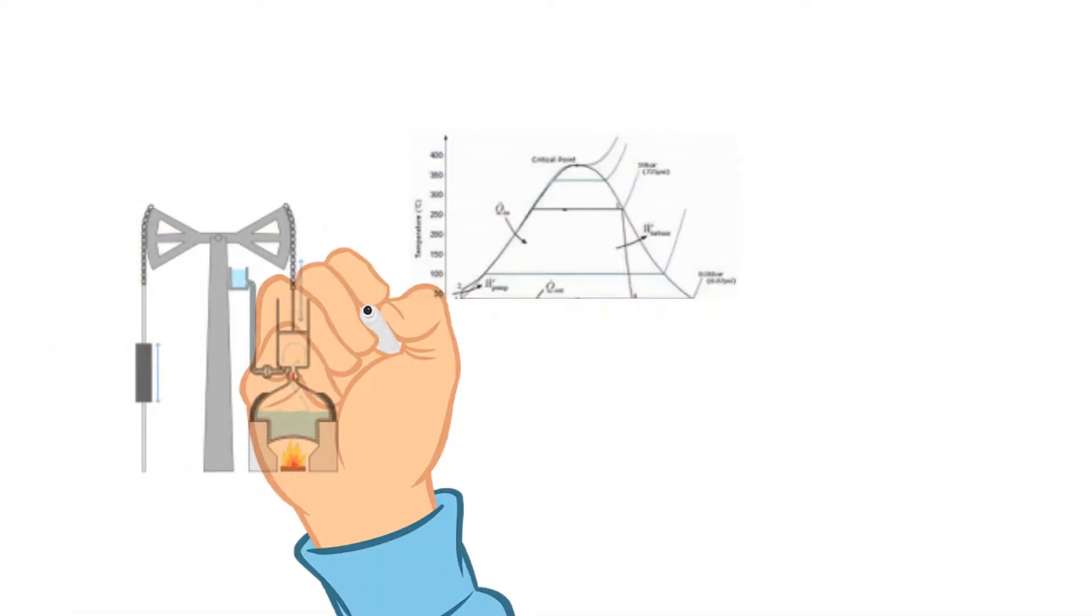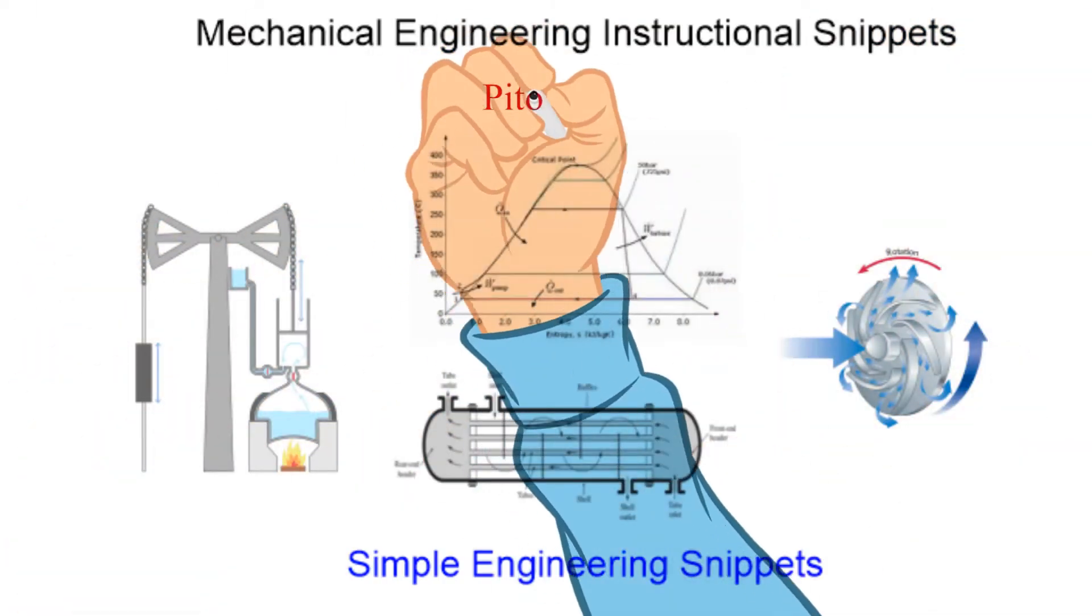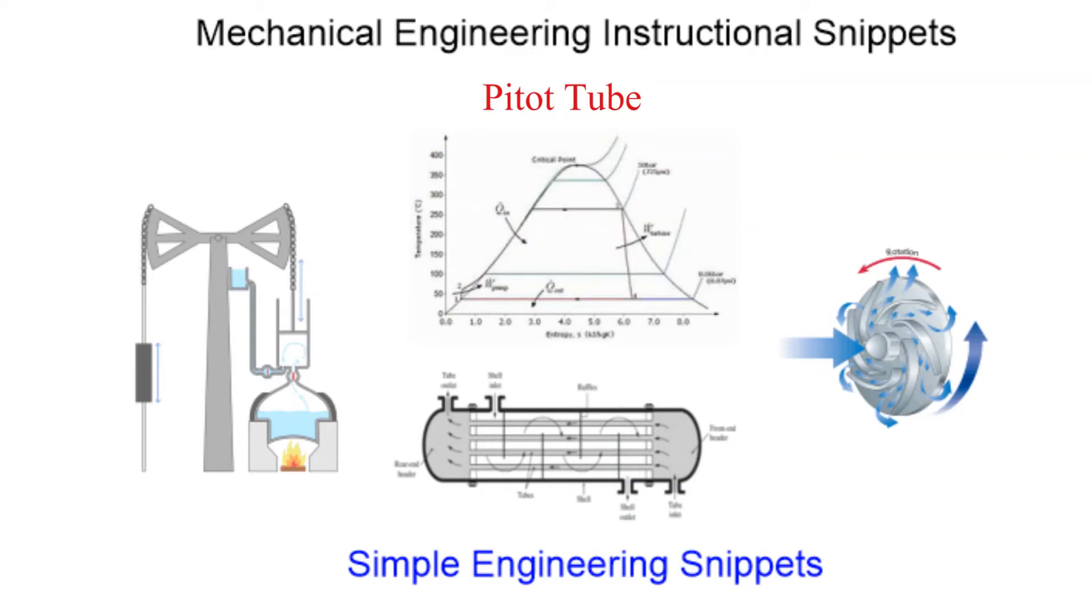Welcome to another instructional snippet. This snippet will be using Bernoulli's equation to solve for the fluid velocity in a pipe. The analysis is simplified but the velocity measuring device is real, known as a pitot tube.